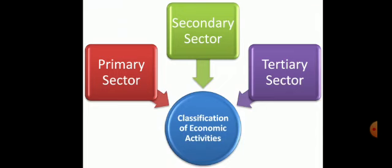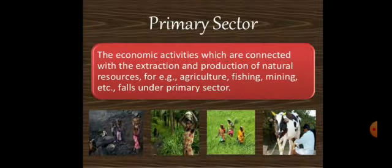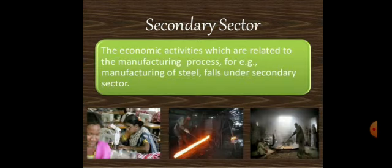The various activities have been classified into three main sectors: primary sector, secondary sector and tertiary sector. The primary sector includes agriculture, forestry, animal husbandry, fishing, etc. Manufacturing and construction are included in the secondary sector. The economic activities related to the manufacturing process — for example, manufacturing of steel — come under this category.